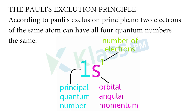The Pauli's exclusion principle states that no two electrons of the same atom can have all four quantum numbers the same.